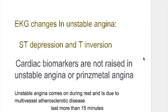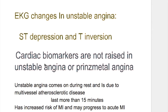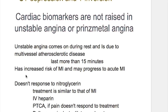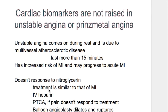The disorder to be differentiated from subendocardial infarct is unstable angina, because in unstable angina there is also ST depression. However, in unstable angina, cardiac biomarkers are not raised. Unstable angina comes on during rest and is due to multivascular atherosclerotic disease, lasting more than 15 minutes. It carries increased risk of myocardial infarction and may progress to acute MI. It does not respond to nitroglycerin and the treatment is similar to that of MI.